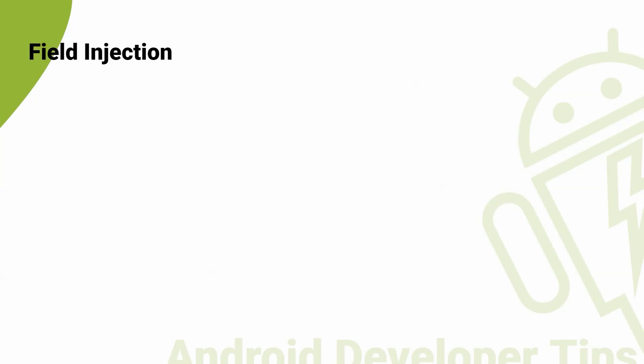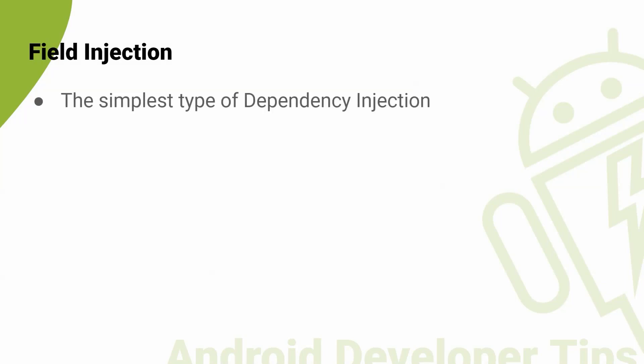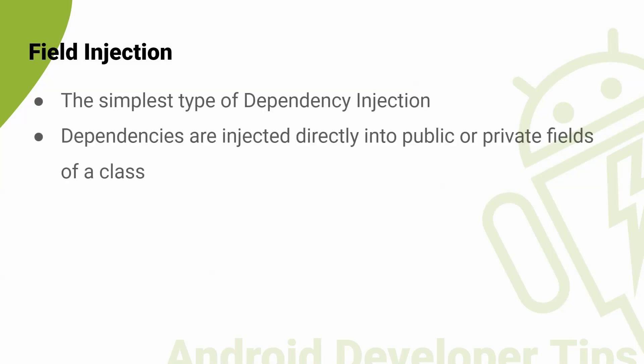The other type is field injection. Field injection is the simplest type of dependency injection, in which dependencies are injected directly into the public or private fields of a class.